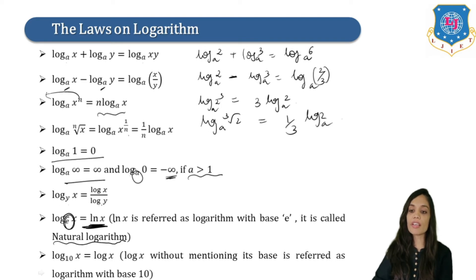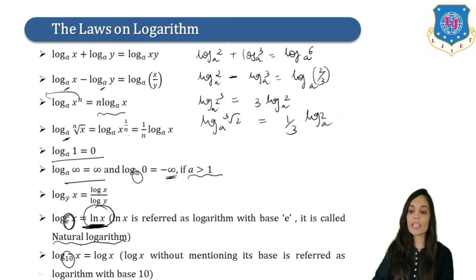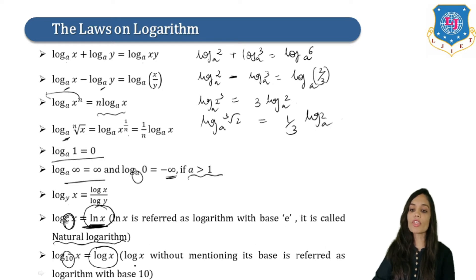So whenever we have base e, we will write it as ln x and it is known as the natural log. And if the value of a is 10 — that is, if we have log x to the base 10 — it can be written as simply log x. So log x without mentioning its base is referred to as the logarithm with base 10.